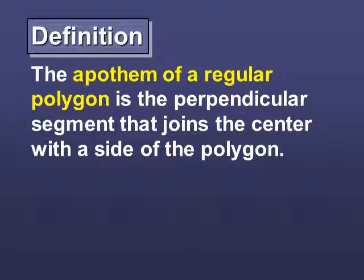And the apothem is a new word, probably, that you've never heard before. I mean, I can't think of a time where you have. If you can, that's awesome. But anyway, it's a segment that goes from the center, and it goes to the midpoint of the segment of a side. And that segment actually happens to be perpendicular. It ends up being a perpendicular bisector. So, let's look at a picture of these two words, these two new definitions.